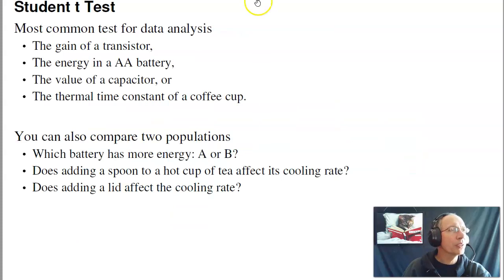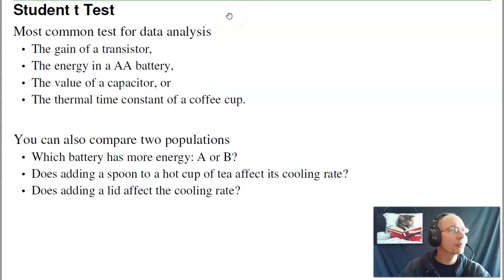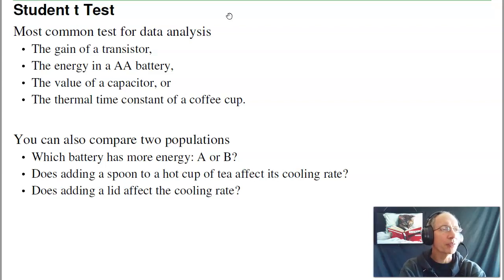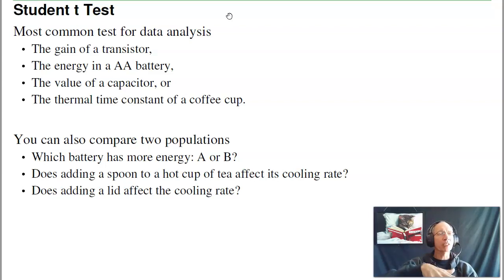The Student T-Test is a very common test — probably the most common test you're ever going to use. With it, you can find out things like the gain of a transistor, the energy in a AA battery, the value of a capacitor, the thermal time constant of a coffee cup. You can also compare two populations: which of two battery types has more energy, or does adding a spoon or a lid to a coffee cup change how fast it cools off? Those are things you can answer with a t-test.